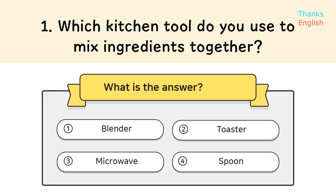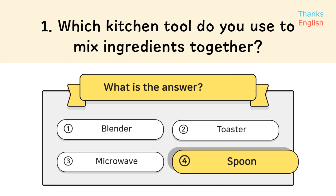Question 1: Which kitchen tool do you use to mix ingredients together? Answer 4: Spoon.